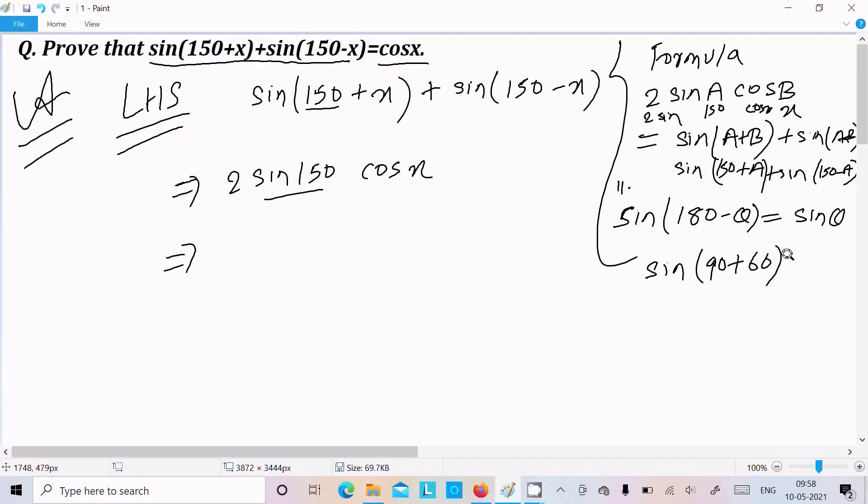So sin(90+60) is cos60 which is 1/2. So anyone you can use. Here I'm going to make sin(180-30), so if you subtract this one it will equal to 150.